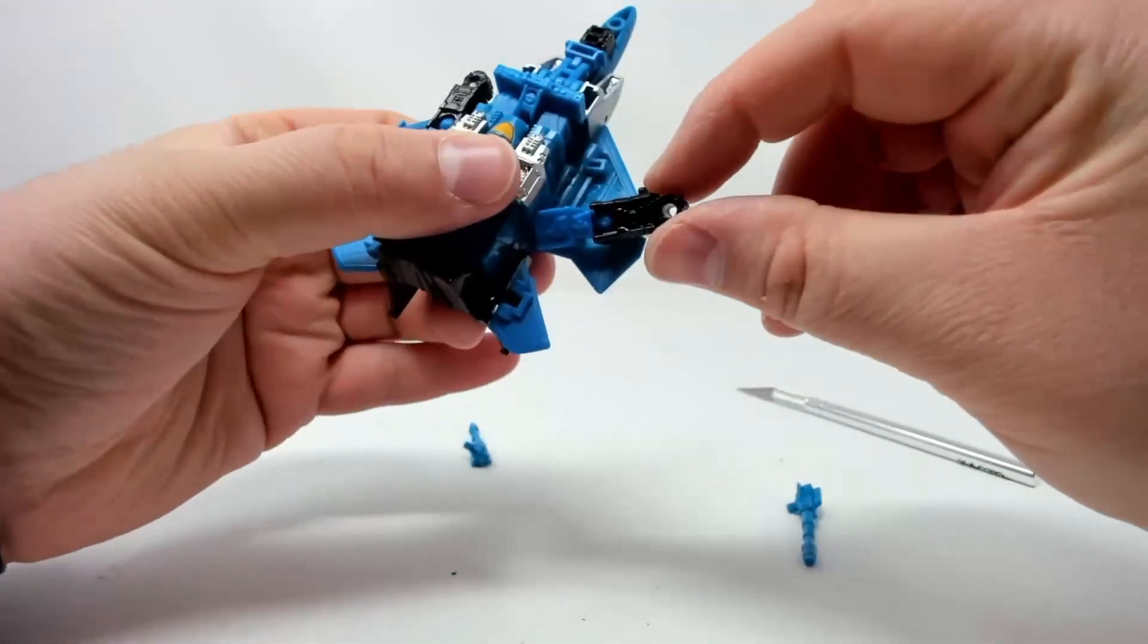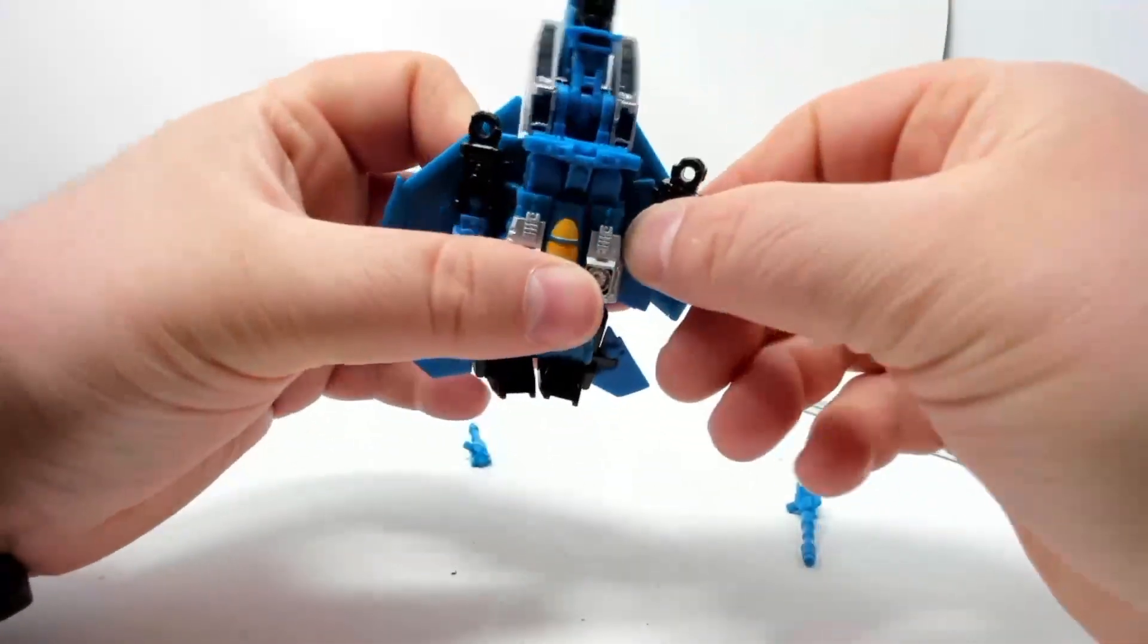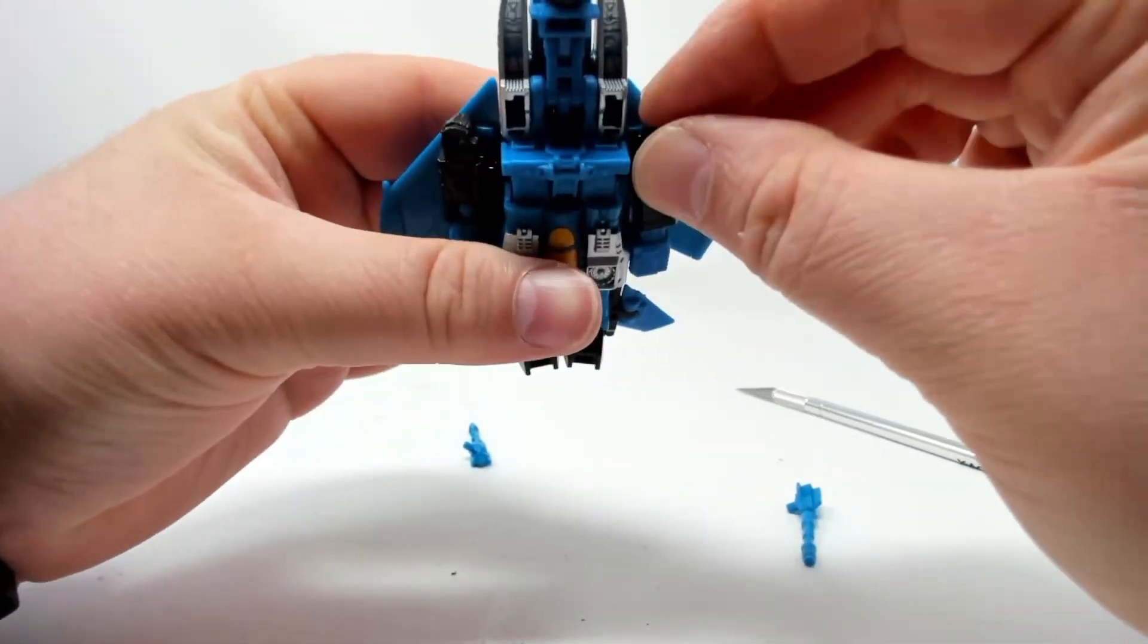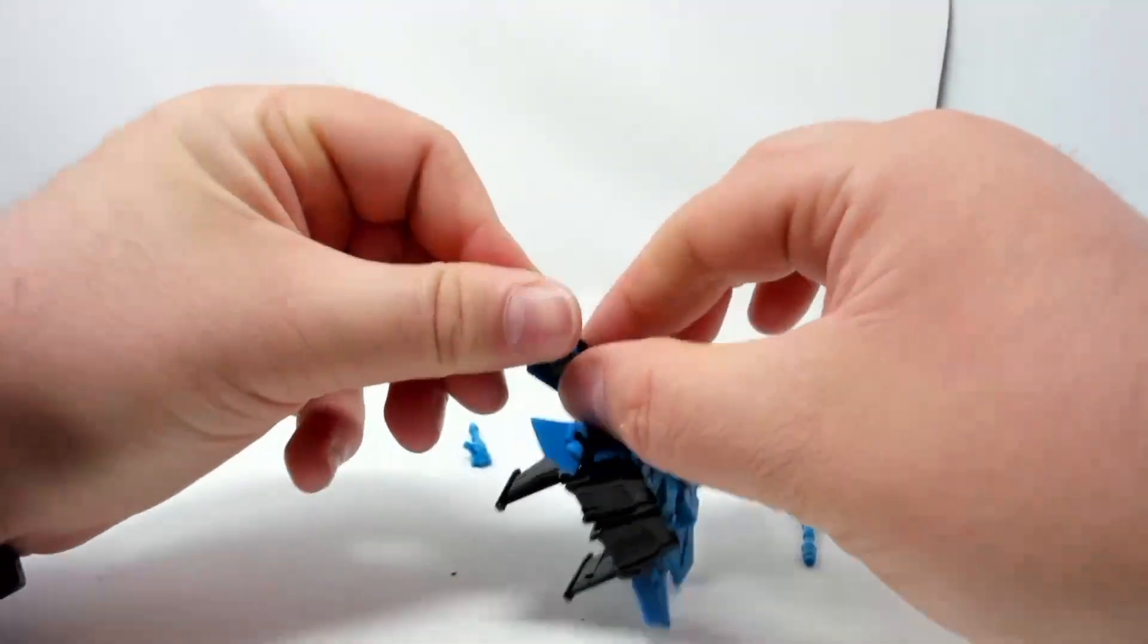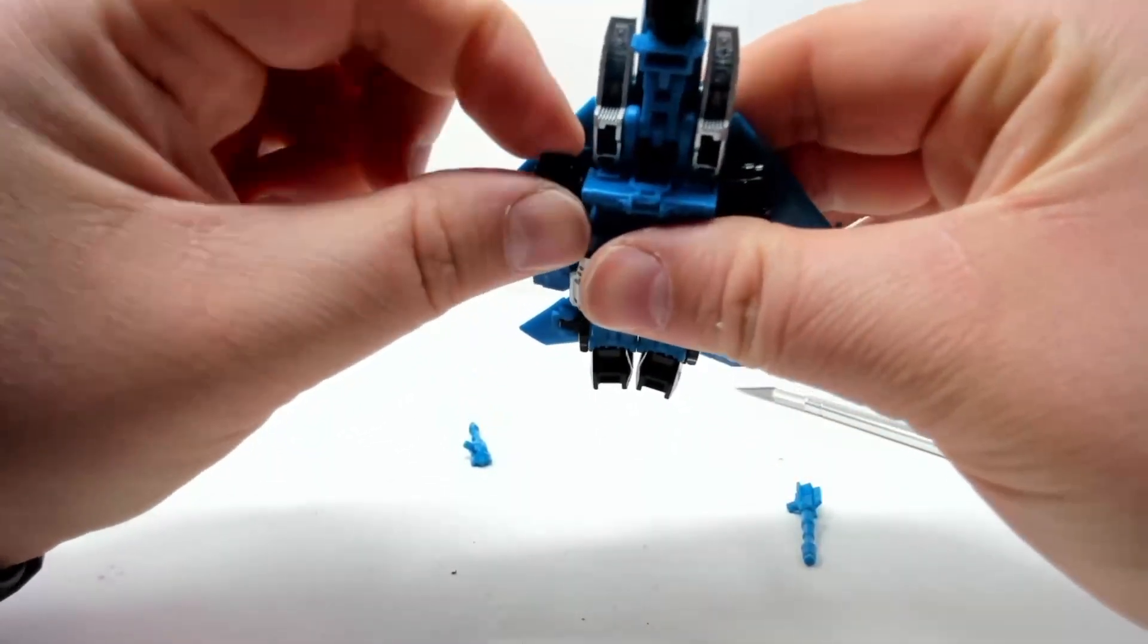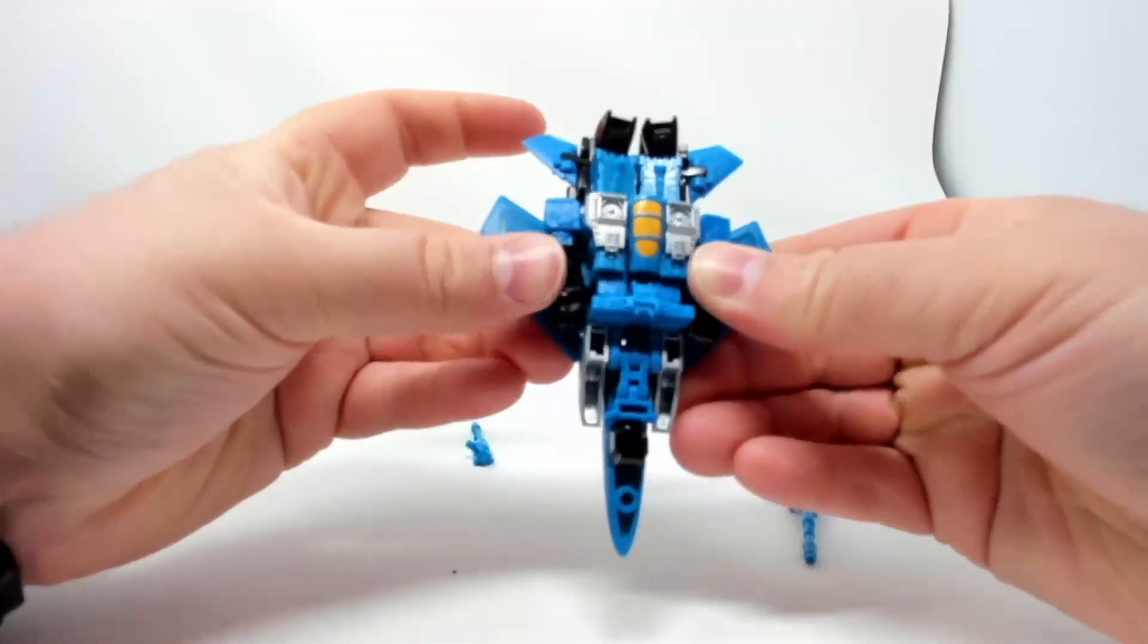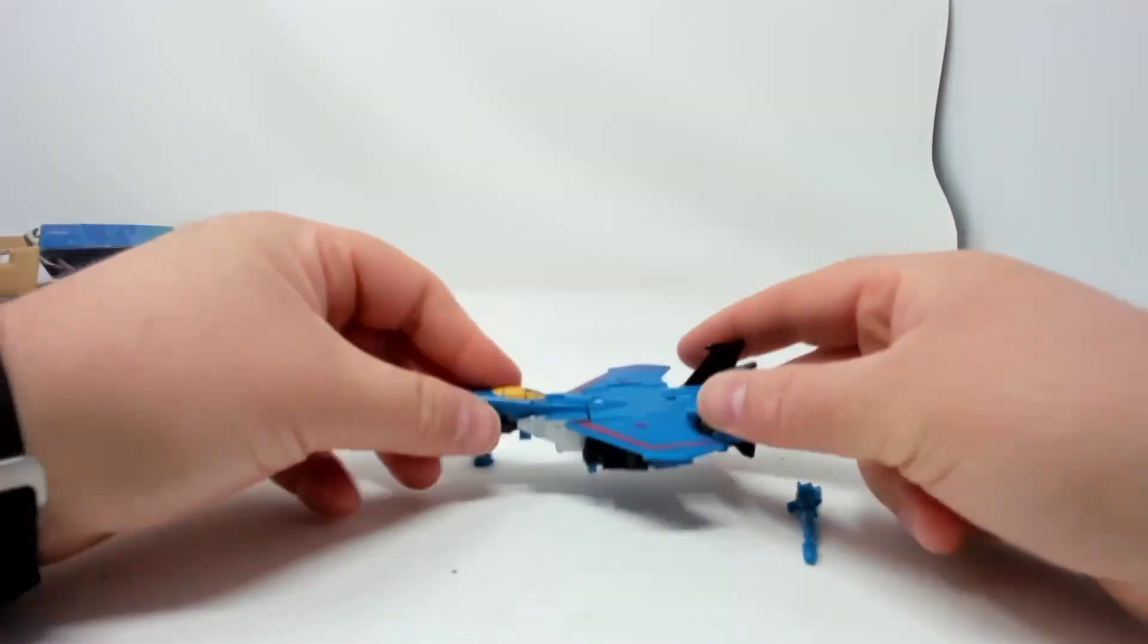All right, and that's just going to close back up. And there's little pegs right here in his arms that are going to tab into there. We can swing that around, do the same thing. There we go, now he's in jet mode.